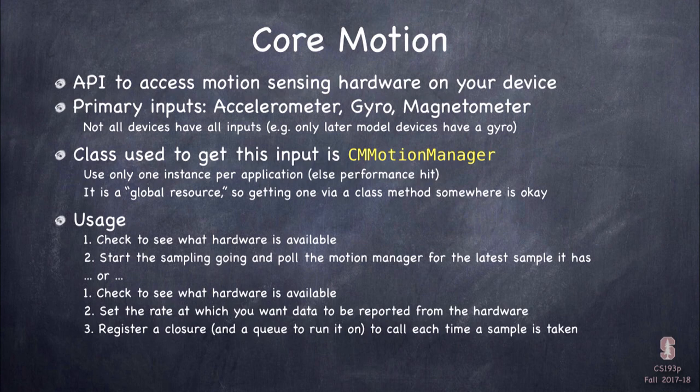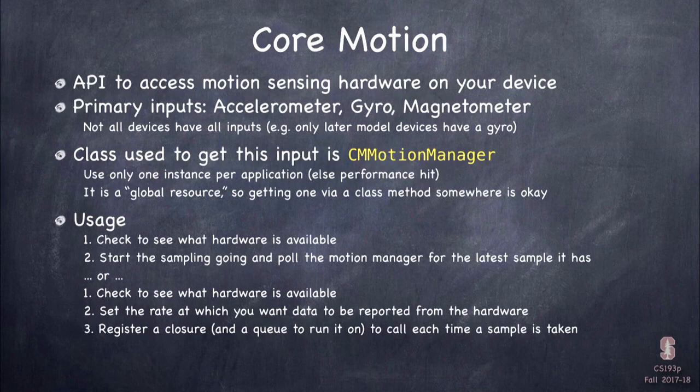The way the API works is you first check what hardware is available — that's a very important check. Then you can either start sampling, asking the CMMotionManager for the current state of the accelerometer, gyro, or magnetometer, or you can register a closure at a certain refresh rate and it will execute your closure at that rate. So it's either pull or push, depending on how your app works.